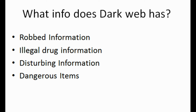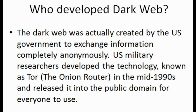On the dark web, there is information that has been robbed, illegal drug information, disturbing content like child pornography, and dangerous items like guns. This dark web — a super encrypted web — was actually created by the US government to exchange information, specifically for spies to exchange information in a completely anonymous manner. US military researchers developed this technology, basically in the mid-90s, and released it to the public domain for everyone to use.